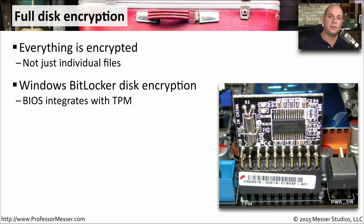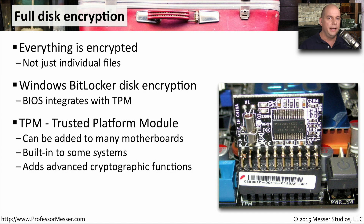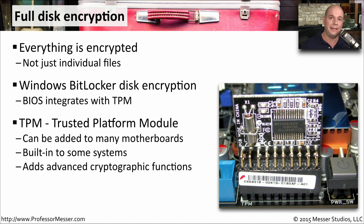One way to do this is by using a piece of software in some Windows editions called Windows BitLocker. This is full disk encryption when you're running Windows. It integrates with a part of your BIOS called the TPM — the Trusted Platform Module — which is hardware cryptographic functionality either built into the motherboard or installable via a dedicated slot. It adds cryptographic functions so you can perform encryption and decryption and keep everything on your storage devices completely safe and secure.